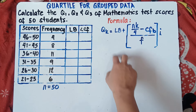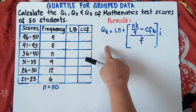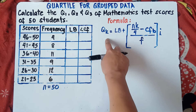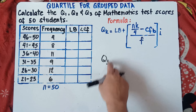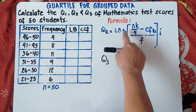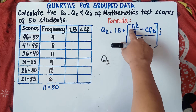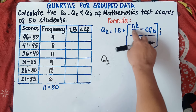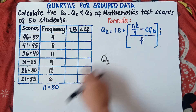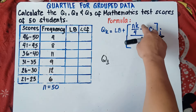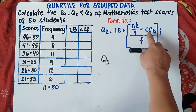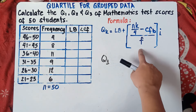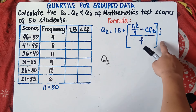The formula of the quartile is Q sub K, where K stands for the quartile that you're looking for. If you're looking for quartile 1, K will be 1. The formula is: Q sub K equals LB plus the bracket NK over 4, minus CFB, all over F, times I. N is the total number of frequency (50), K is the quartile number, CFB is the cumulative frequency before the quartile class, F is the frequency of the quartile class, and I is the interval.